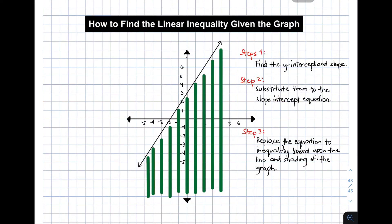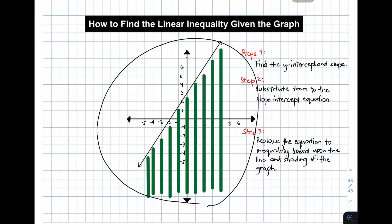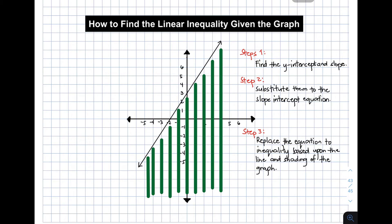Now we have here the topic: how to find the linear inequality given the graph. As you can see, we have a given graph of linear inequality in two variables on a Cartesian plane. Our task here is to find the original linear inequality in two variables. Given these three steps, we will be able to find the original inequality.